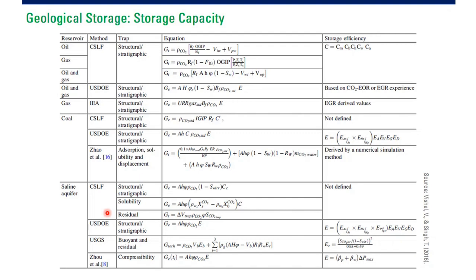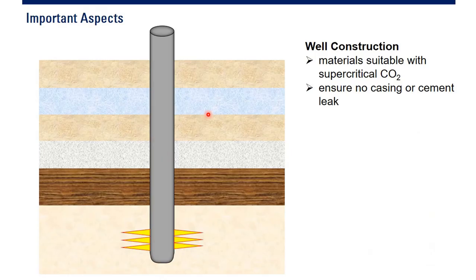These are some important technical aspects of CCUS. First, well construction: we need to consider materials' suitability with supercritical CO2 and ensure no casing or cement leakage. Karena kalau CO2-nya leaking gara-gara casing-nya bocor atau semen-nya tidak bagus, it will be useless. We also need to be very careful with the drinking water layer — the upper aquifer — to ensure CO2 will not contaminate it.